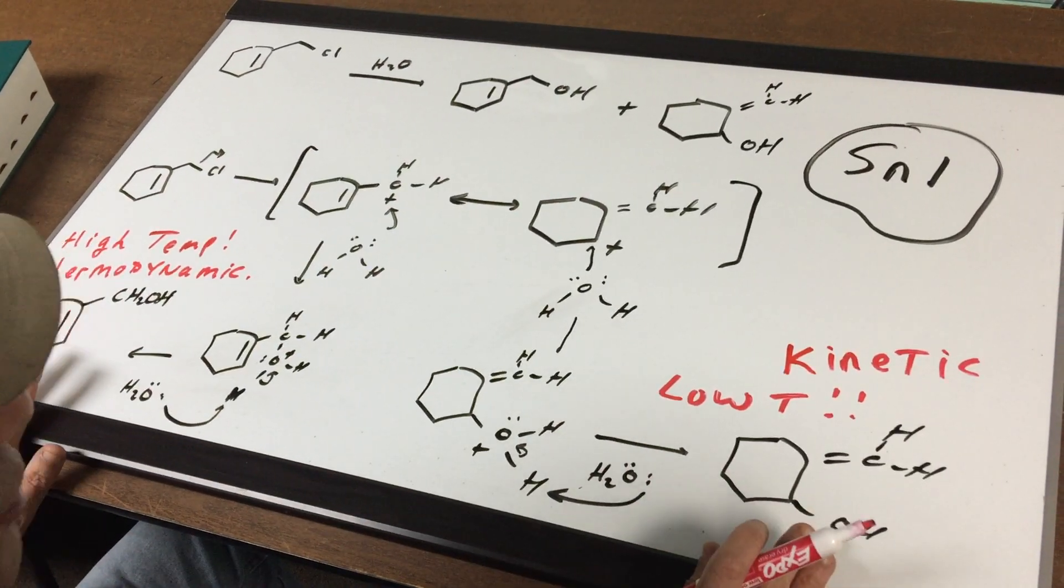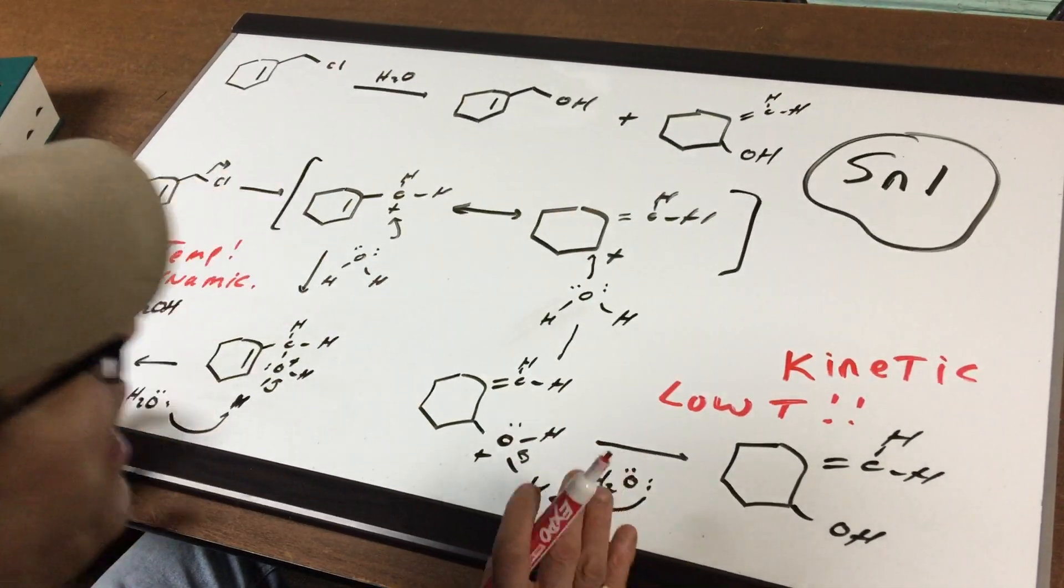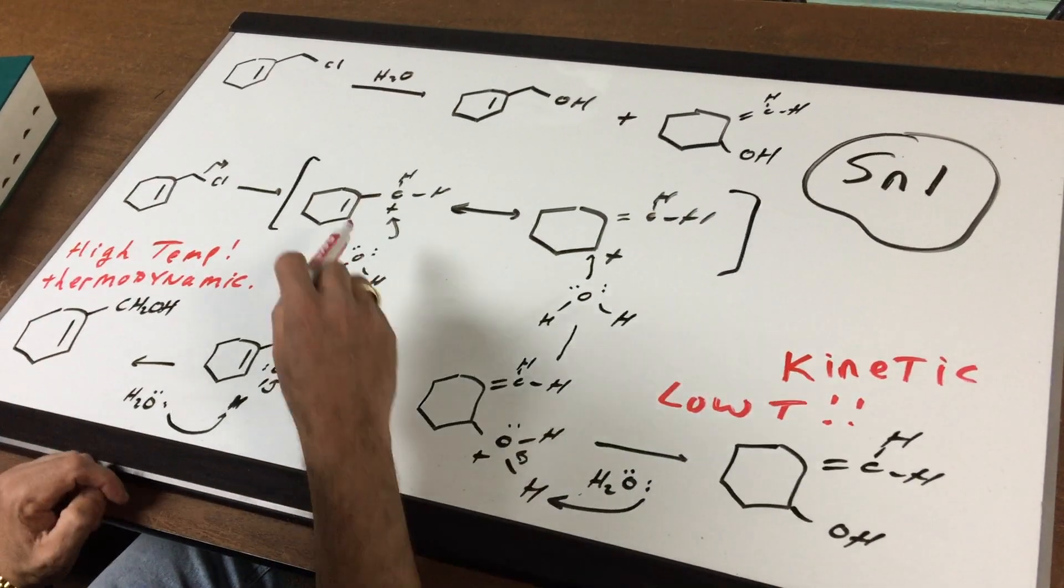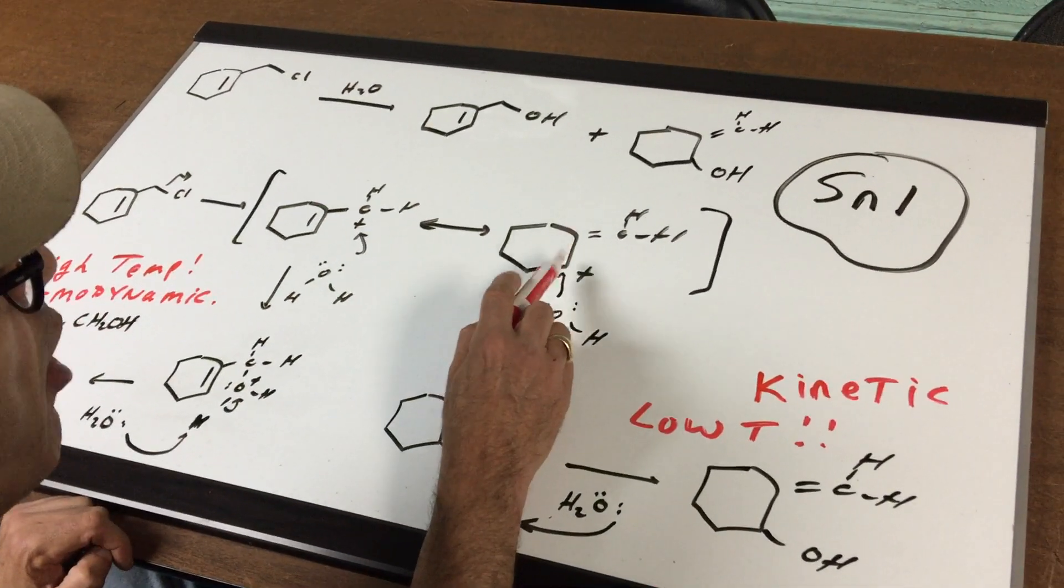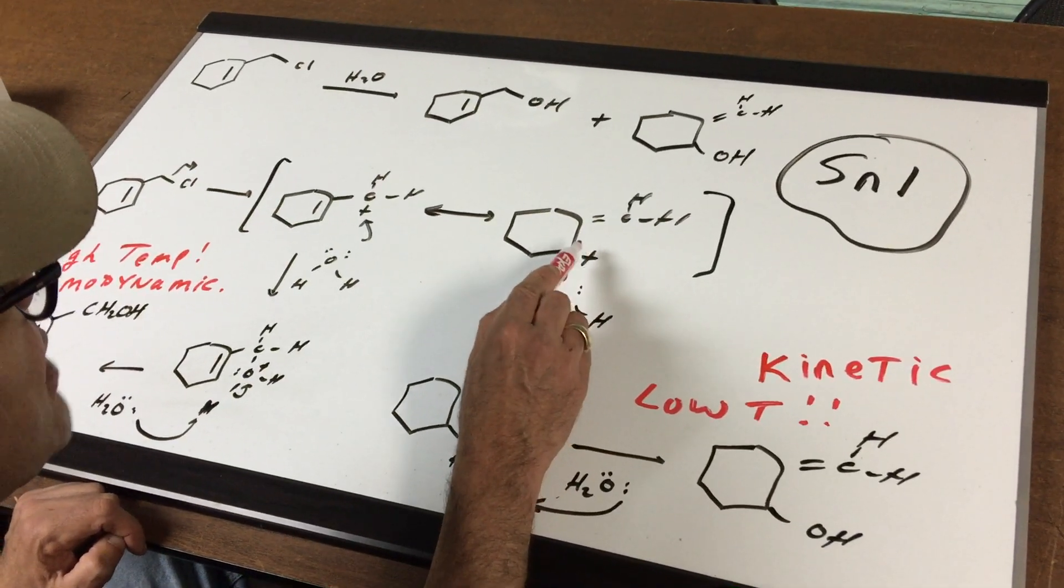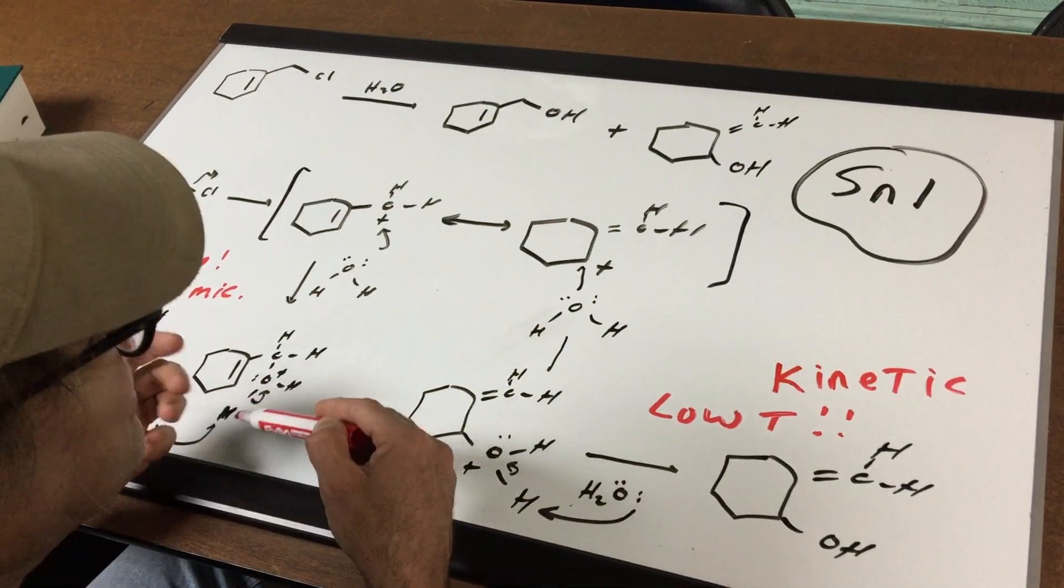The answer lies in the fact of which one is at the high temp and the low temp. First of all, this carbocation is more stable. It's a secondary allylic. That means that this carbocation is going to form faster.